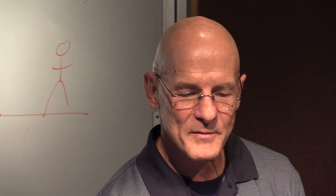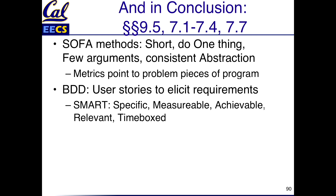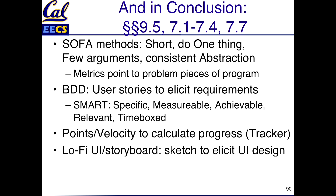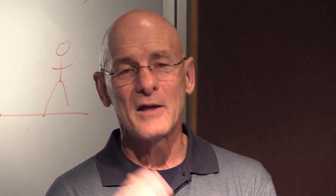To wrap up: we started with advice on how to write beautiful code — short, do one thing, few arguments, and consistent abstractions so you don't have smelly code, with metrics pointing to areas of concern. The big idea of behavior-driven design is user stories and lo-fi user interfaces to work with the customer to figure out what they want — and good user stories need to be specific, measurable, achievable, relevant, and time-boxed. Tracker helps calculate progress. And this other plan-and-document universe puts a lot on the project manager's shoulders to try and be successful.